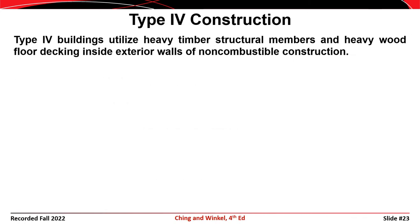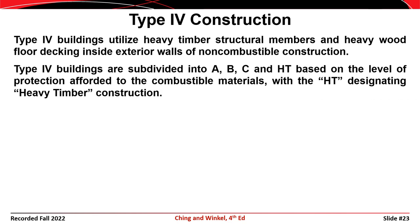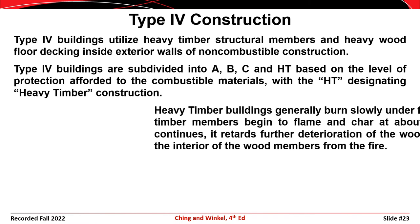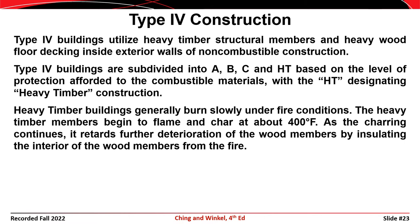Type 4 construction is similar to Type 3 construction with the exception that the entire interior of the structure is constructed of lumber or timber. Type 4A buildings have structural elements that are completely protected with non-combustible protection. Type 4B buildings have structural elements mostly protected with non-combustible protection. Type 4C buildings have most structural elements left unprotected. The HT designation refers to heavy timber construction, where timbers or glue-laminated members tend to develop a layer of char under fire that insulates the core of the members and increases their resistance to fire.